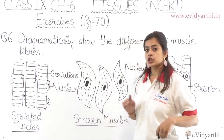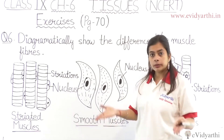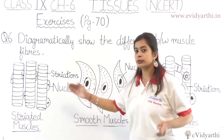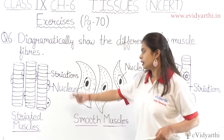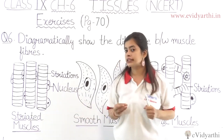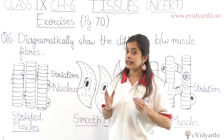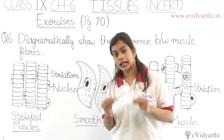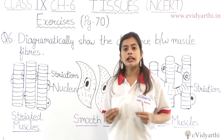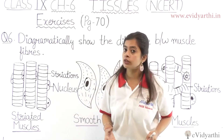First we have the striated muscles. Striated muscles — the name itself tells us we can see stripes. It doesn't require rocket science to understand. Diagram questions are coming in exams, so you have to practice in that way — drawing diagrams and then answering about their functions.